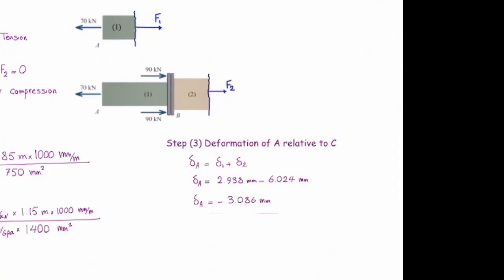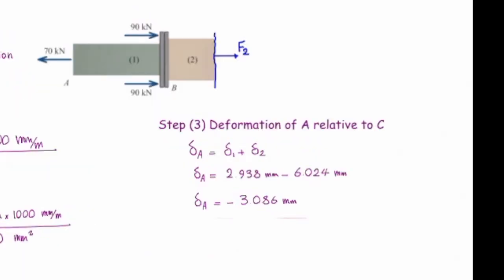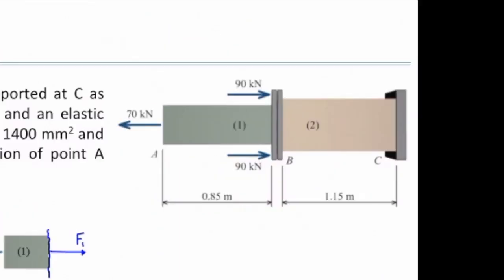And that gives me 2.938 minus 6.024, which is equal to negative 3.086 millimeter. Here, the negative sign means that the overall length of the element is getting shorter. So, which direction does that point A move to? It moves to the right. So, that point moves to the right. Does that make sense?